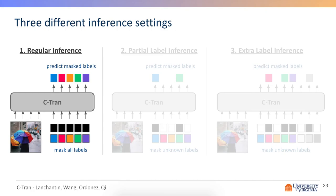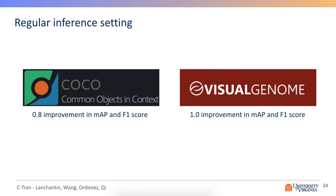So we first demonstrate our model in the regular inference setting, where no labels are known. Our method achieves state-of-the-art results on both the COCO and Visual Genome datasets.